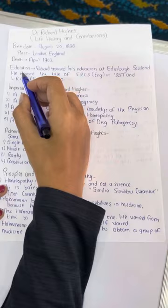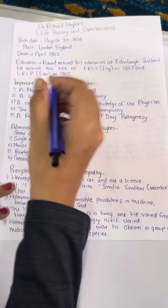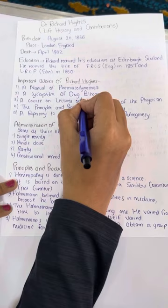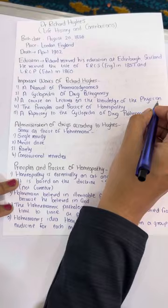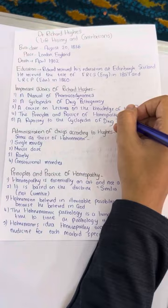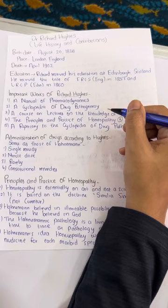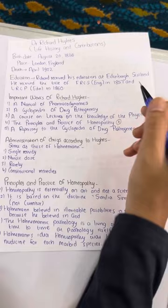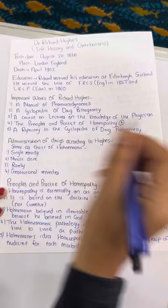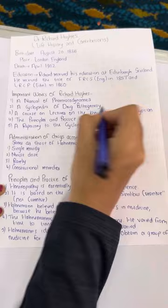What were the important works of Richard Hughes? A Manual of Pharmacodynamics, A Cyclopedia of Drug Pathogenesis, A Course of Lectures on the Knowledge of the Physician, The Principles and Practice of Homeopathy — this is the most important book, which students of 4th year also read when learning philosophy. You will come across this book of Principles and Practice of Homeopathy in the syllabus for reading philosophy.